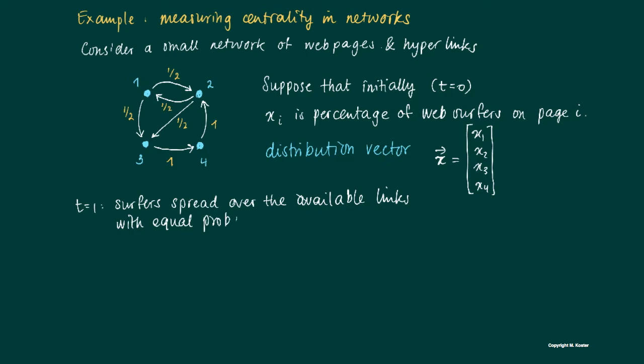And if you look more carefully, this is an equal spread. So if there are two links available, then the percentages of web servers spreading over these two links will be 50%, so we get a transition from distribution vector X to a distribution vector Y.